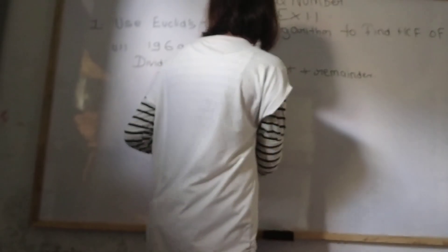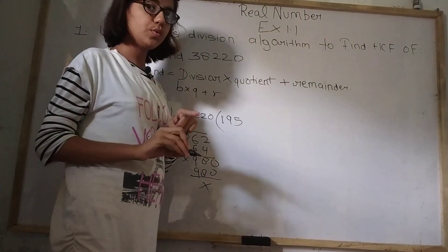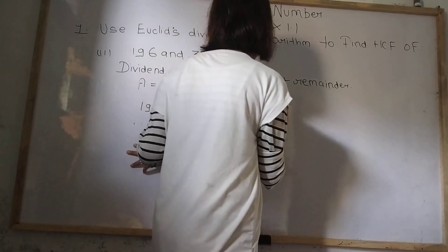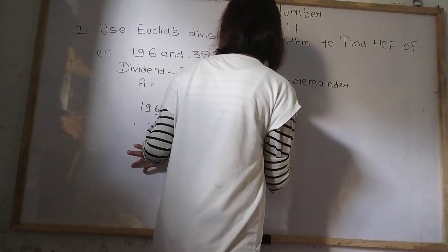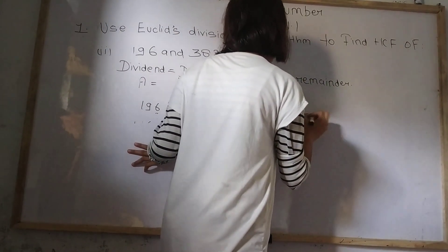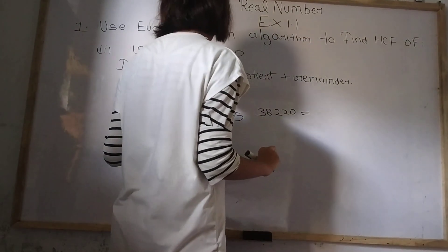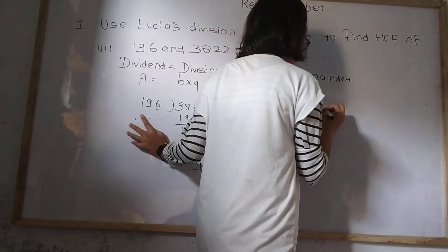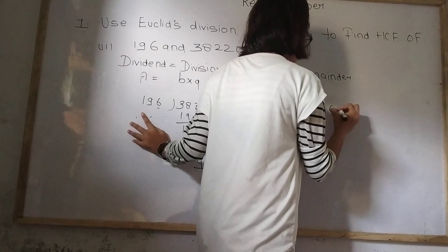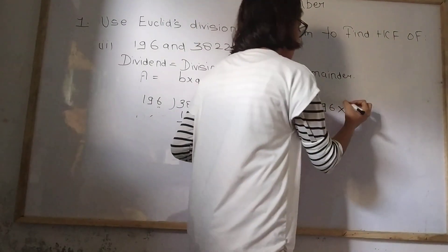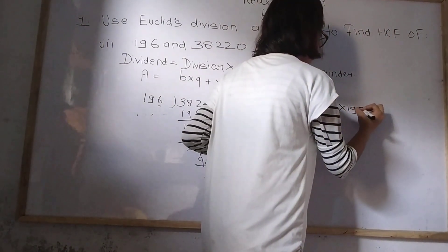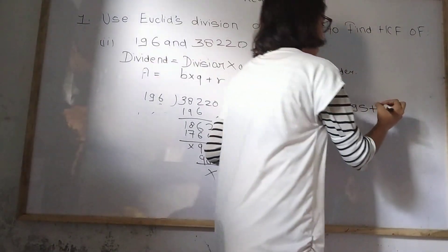So we can write it thus 38,220 is our dividend, equals to what is our divisor? 196 is our divisor into what is our quotient? 195 is our quotient plus remainder. What is remainder? Nothing, 0.